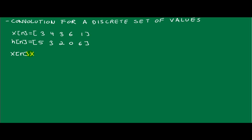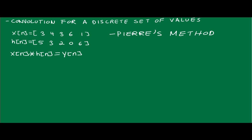The convolution of X with H will give you Y. Now I'm going to show you what's called Pierre's method, and it involves simple multiplication. So let's just write the values: three, four, three, six, one — and five, three, two, zero, six.